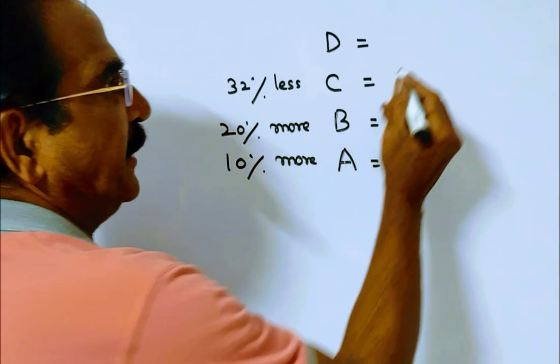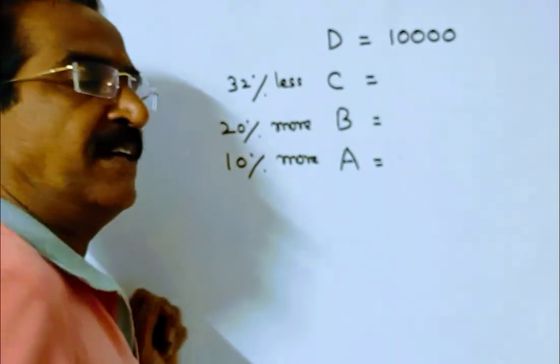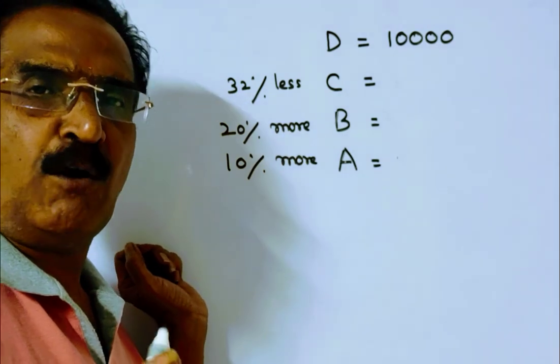Here the marks obtained by D, say 10,000. I am taking it as 10,000 to avoid decimals.